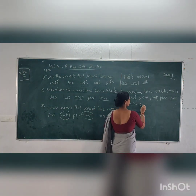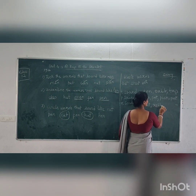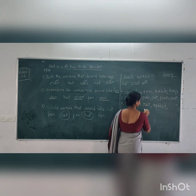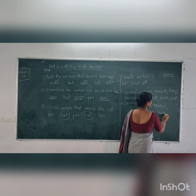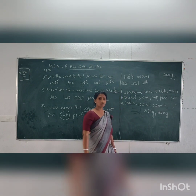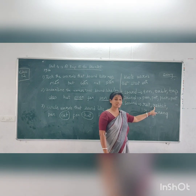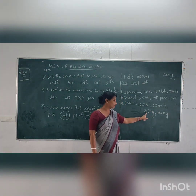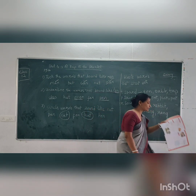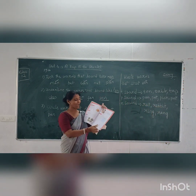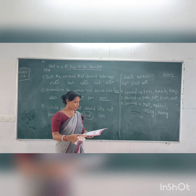For the 'r' sound: rat, rabbit, ring, rang — all start with 'r'. You can even take more words. So rat — R, rabbit — R, ring — R, rang — R. In your book, you have to write two words each. I have given you more words as examples.